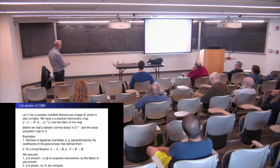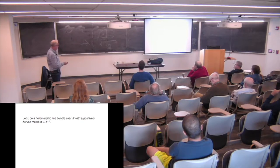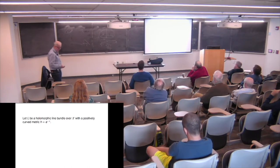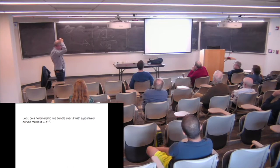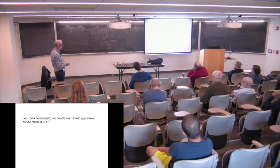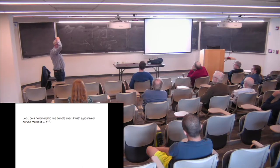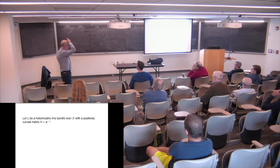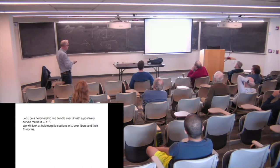The convexity assumption is that the total space X is Kähler. And now we need e^{-φ}: L is a holomorphic line bundle over X, and we have a positively curved metric on L written as e^{-φ}. This means locally the metric is given by e^{-φ} where φ is a plurisubharmonic function, so the curvature of the line bundle is positive. Instead of holomorphic functions, I look at holomorphic sections of the line bundle.